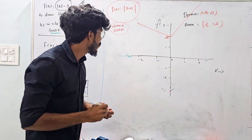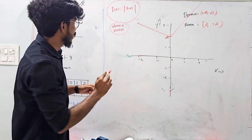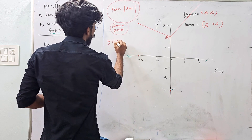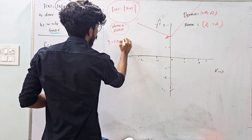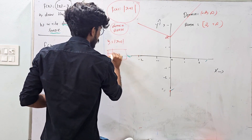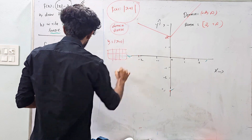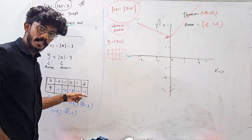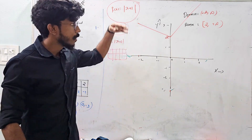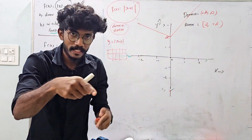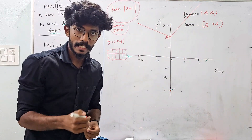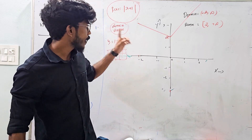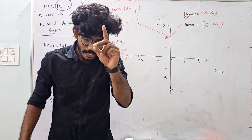This question is y equal to mod x plus 1. Make a table, find the values, plot the points, write the graph, write the domain and range — and show it in the exam.